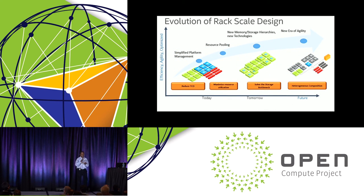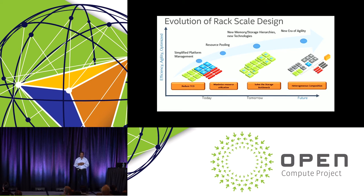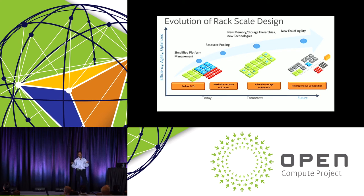This is the evolution of the path we're taking to get this to fruition. First, we started off with defining this single pane of glass management. In order to do that, we needed to go beyond just compute to look at both storage and networking and create those environments. We also needed to be able to manage at scale — managing 10 to 12 racks together in an RSD pod.